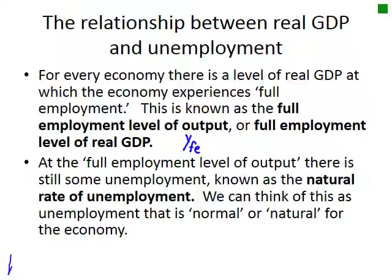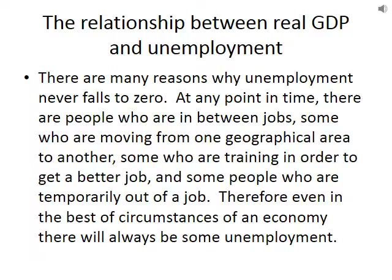At the full employment level of output, there is still some unemployment, known as the natural rate of unemployment — unemployment that is normal or natural for an economy. There are many reasons why unemployment never falls to zero. At any point in time, there are people in between jobs, moving geographically, training for better jobs, or temporarily out of work. There's also structural unemployment, where industries die out and new ones emerge.